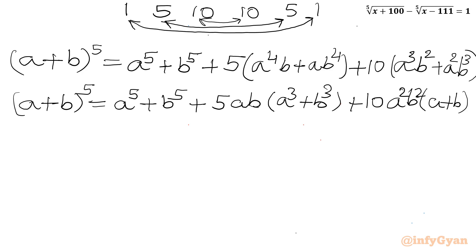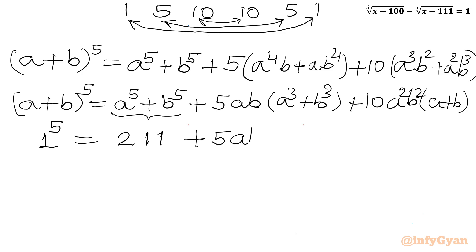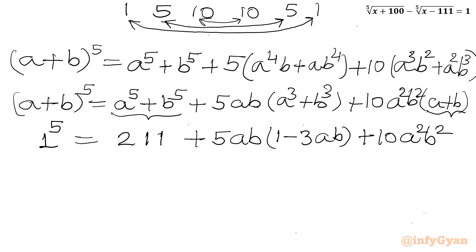Now I will apply all the known values. A plus B equals 1, so 1⁵ on the left. A⁵ + B⁵ is 211 from equation 2. A³ + B³ equals 1 minus 3AB. And A plus B equals 1. So I get: 1 equals 211 + 5AB(1 - 3AB) + 10A²B².